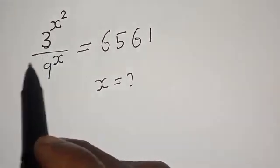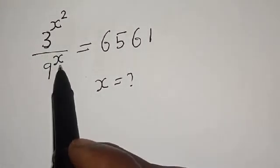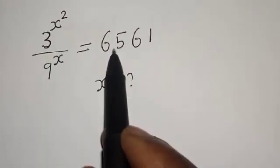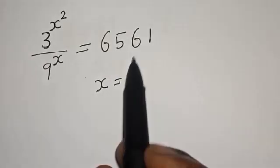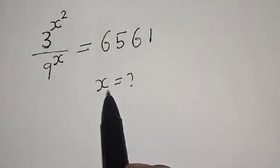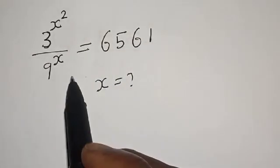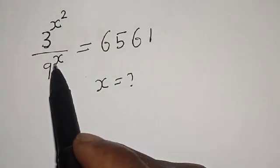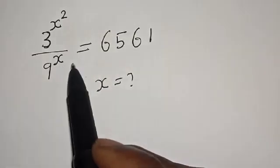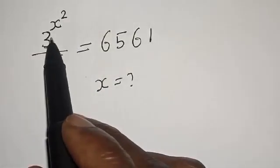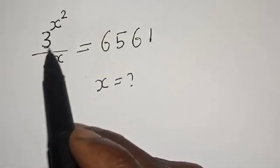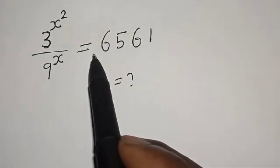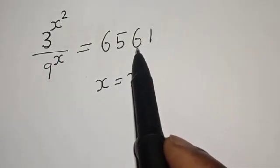3 raised to power s squared divided by 9 raised to power s is equal to 6561. What is the value of s? Hi everyone, welcome to my class. In this class we want to find the value of s from this given exponential equation: 3 raised to power s squared divided by 9 raised to power s is equal to 6561.